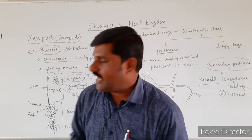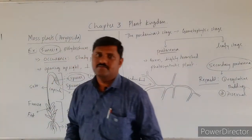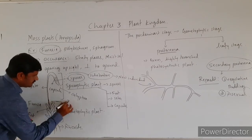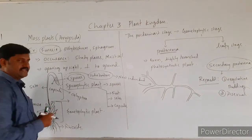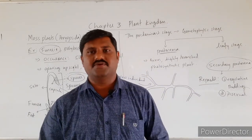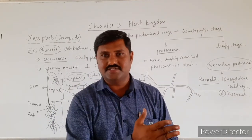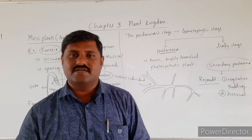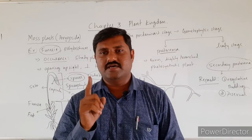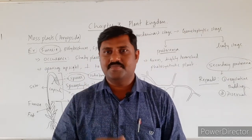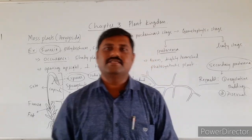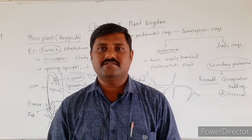In sexual reproduction, on the upper side of the leafy stage (gametophytic plant), you find the sex organs: antheridium (male) and archegonium (female) on special branches. Both gametes fuse through water medium, and the new individual formed is the sporophytic plant. This is how sexual reproduction occurs in these plants. This concludes the classification of bryophytes. Thank you.